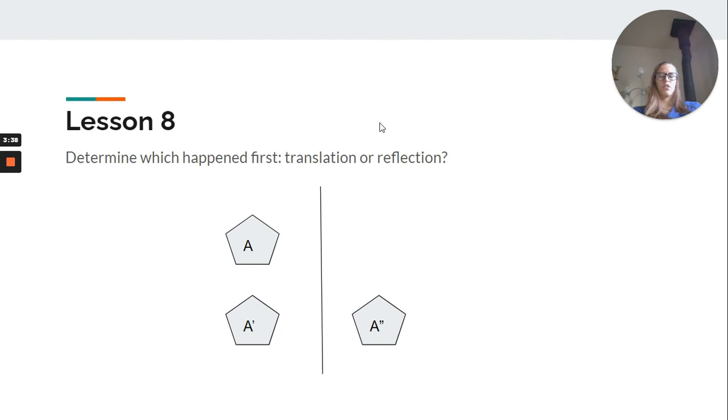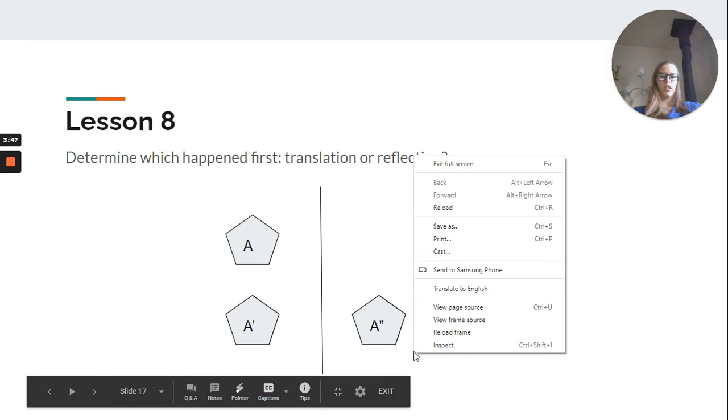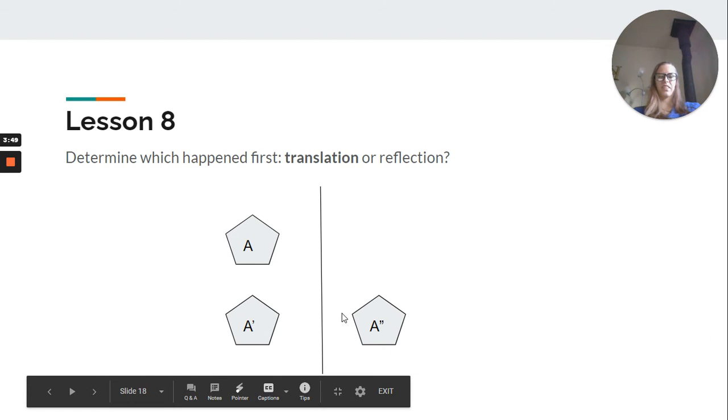Lesson 8 was sequences of translations and reflections. So, we talked about which one happened first, the translation or reflection, while we moved it, and then we reflected it across. Oops, sorry. We reflected it across the line. So, translation happened, then the reflection.